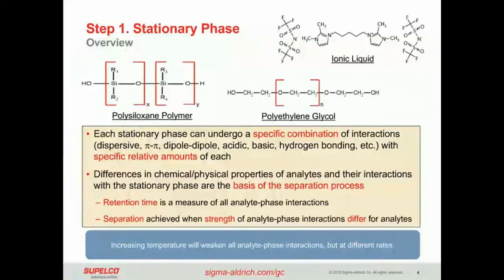The differences in the chemical and physical properties of the analytes and how they interact with the stationary phase really are the basis of the separation process. Retention time can be thought of as a measure of all those analyte-phase interactions. And the separation is really achieved when the strength of those interactions differ for analytes. Also note that increasing the temperature will weaken all of the analyte-phase interactions by different rates. Dispersive will weaken faster than pi-pi, for example.